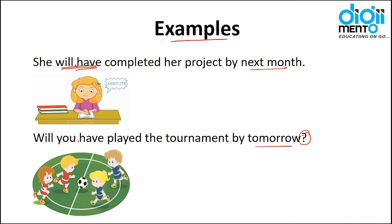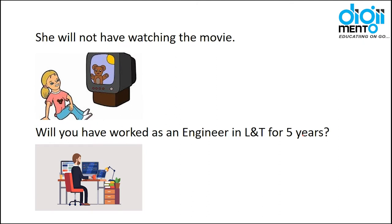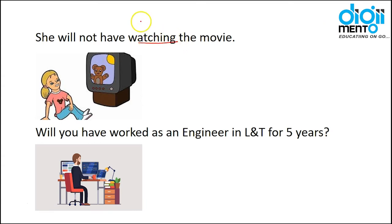'She will not have watched the movie' — note that in perfect tense we always use the third form of the verb, so it is 'watched'. The positive form is: 'She will have watched the movie.' The question form: 'Will she have watched the movie?'